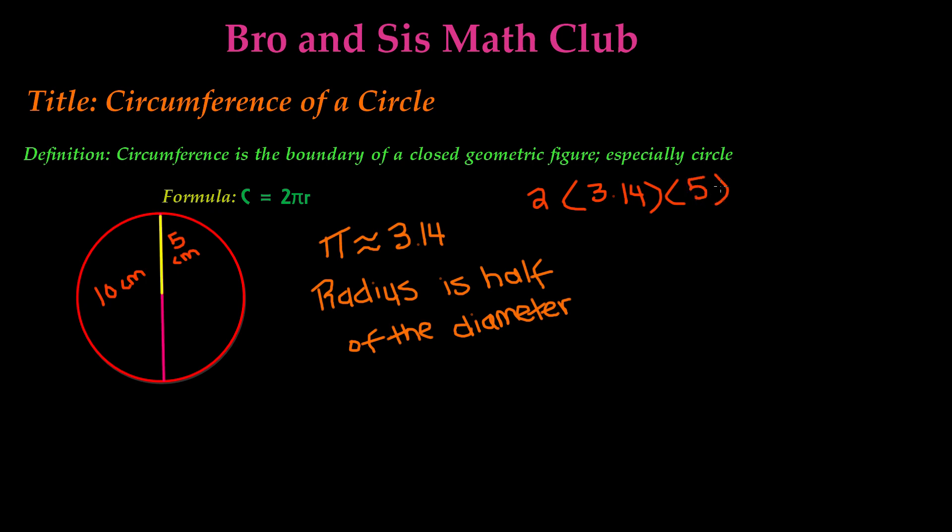So if you multiply 3.14 times 2, you get 6.28. And multiply that by 5, you get 0, carry the 4.